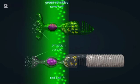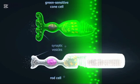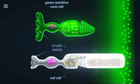Rod cells are photoreceptors in the retina that help us see in low light. They are crucial for night vision, but do not detect color.